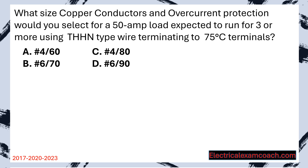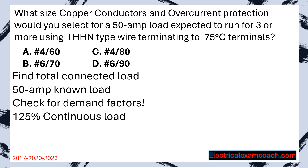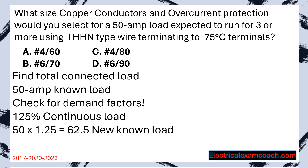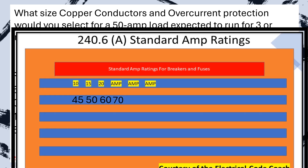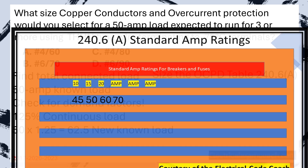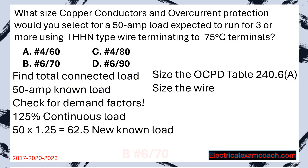What size copper conductors and overcurrent protection would you select for a 50 amp load expected to run for three or more hours using THHN type wire terminating to 75 degrees C terminals? Step one: find the total connected load — starting known load is 50 amps, but we must check for demand factors. It's a continuous load so we apply the 125% rule: multiply by 1.25, giving us a new known load of 62.5 amps. We head to our table and choose the next standard size, which is a 70. Heading to our primary ampacity table on the copper side in the 75 degrees C column, we find a wire that meets or exceeds the known load — a 6 gauge wire on a 70 amp breaker.